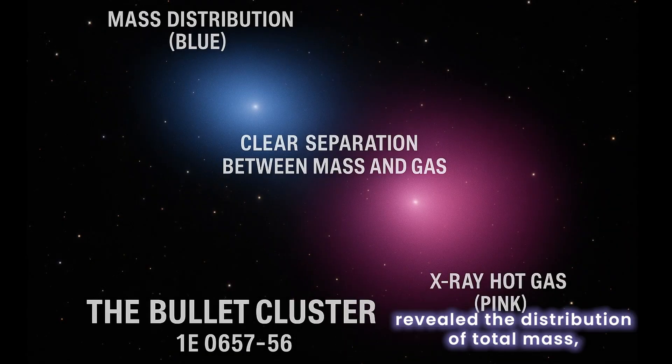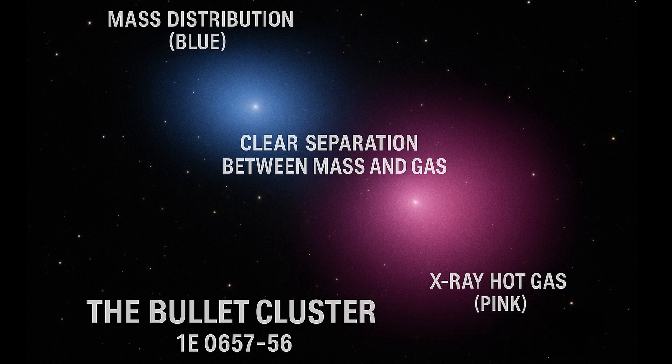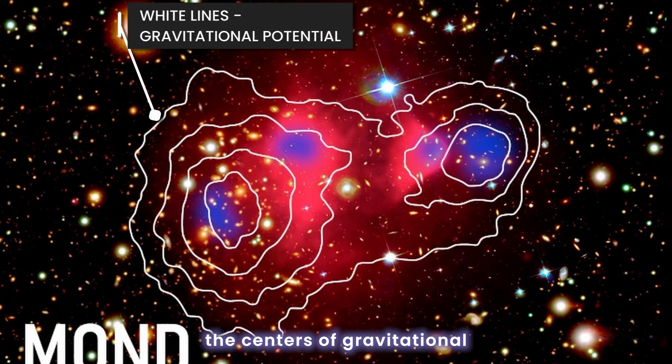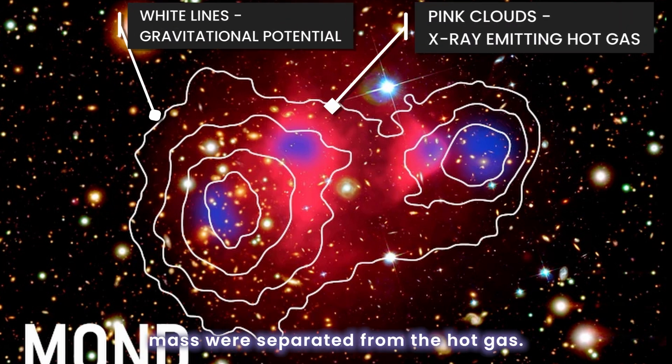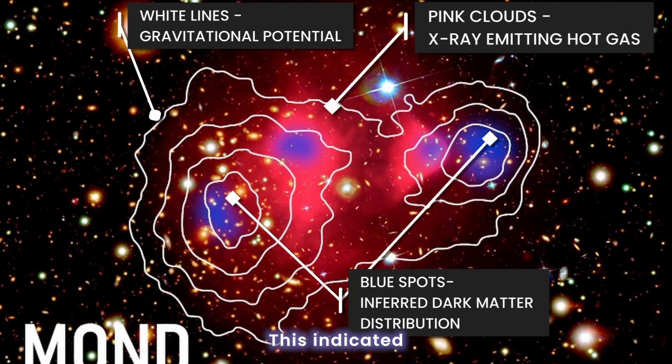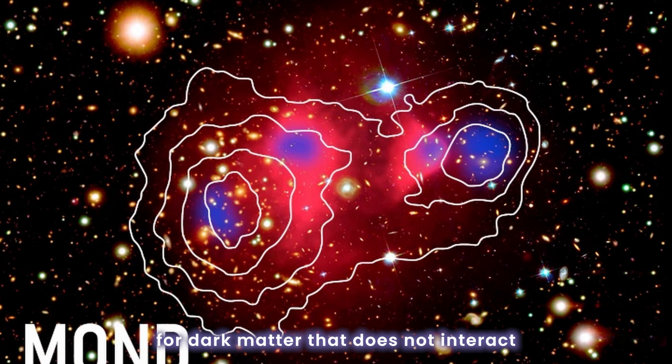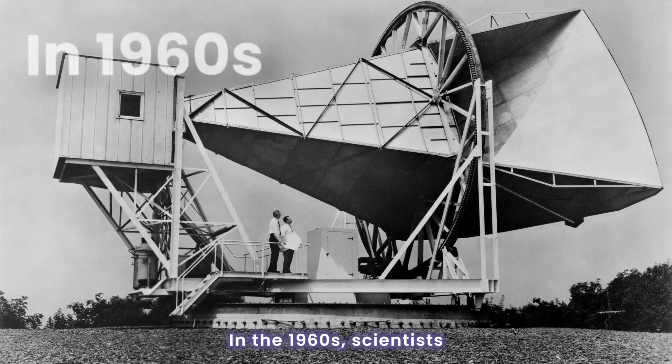Gravitational lensing revealed the distribution of total mass, while X-ray images showed hot gas, which contains most of the ordinary matter. Remarkably, the centers of gravitational mass were separated from the hot gas. This indicated that most of the mass passed through the collision without significant interaction. Strong evidence for dark matter that does not interact like normal matter.